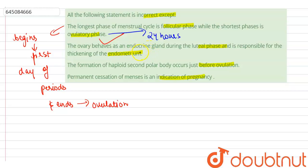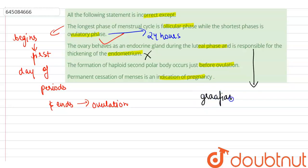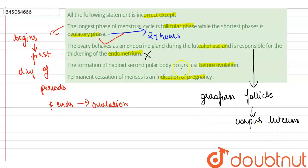The second option — the ovary behaves as an endocrine gland during the luteal phase and is responsible for the thickening of the endometrium — is incorrect. A gland which produces hormones for the regulation of the body is called an endocrine gland. After ovulation, the Graafian follicle of the ovary matures into the corpus luteum, and it is the corpus luteum that works as an endocrine gland, releasing luteinizing hormone, follicle-stimulating hormone, estrogen, and progesterone.